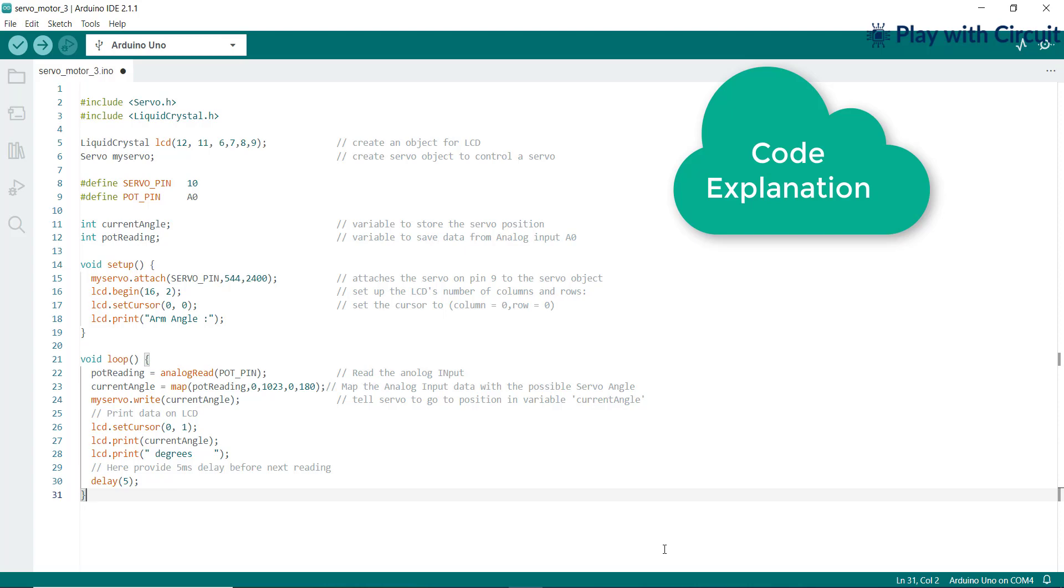The servo angle is set based on the mapped value. The current angle is displayed on the LCD. A delay of 5 milliseconds is added for stability before the next reading.